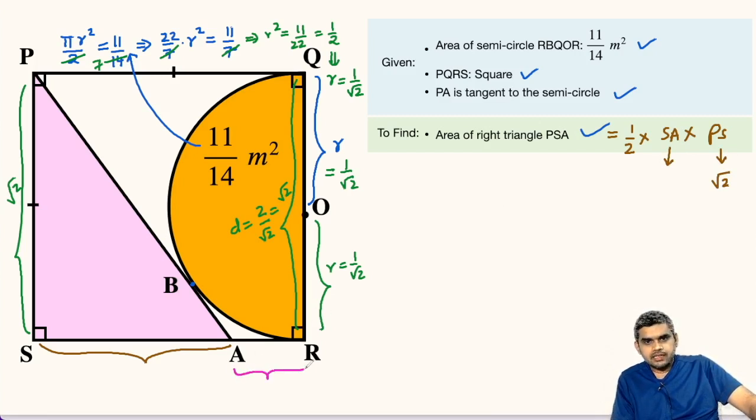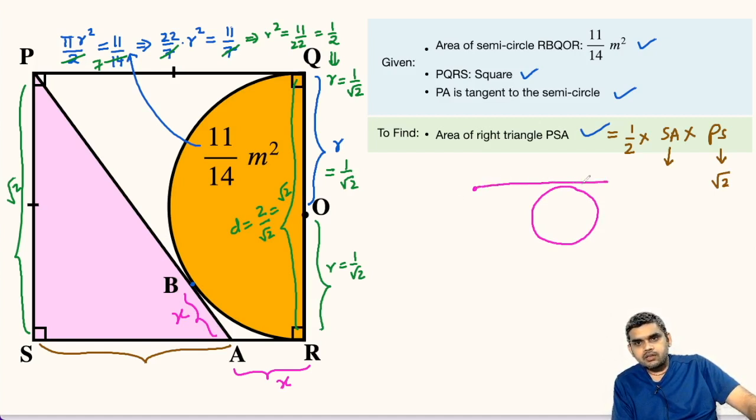So, for that, let us assume this length AR as X, so AB will also be equal to X because we know that if this is a circle and from any external point, if two tangents are drawn to the circle. So, this is the point of contact, this is another tangent and this is the point of contact. So, these two lengths must be equal, this is the theorem. So, we see here A is the external point, AR will be one tangent and AB will be another tangent. Hence, if we are assuming AR as X units, so AB will also be X units.